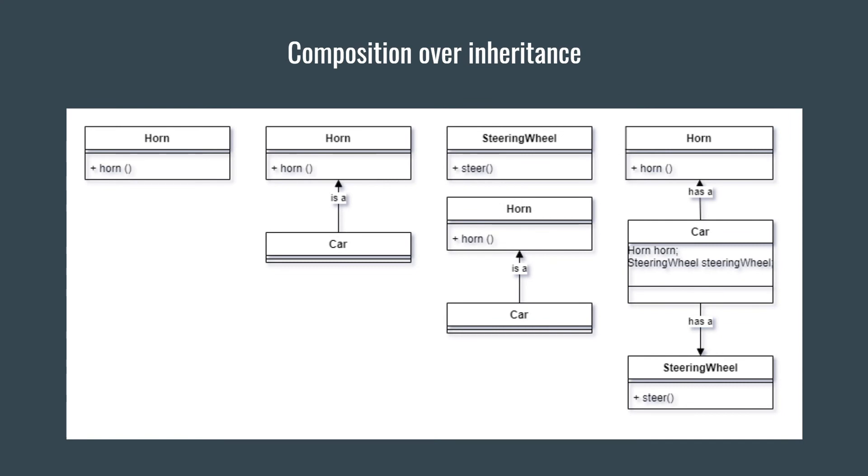But let's see what happens when we use inheritance when we should have used composition to give a simple clear example. We start with a horn class that can horn. The business team asks for a car class. All that this car can do is to horn. So you make it a child of the horn class.